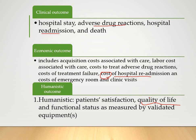Therefore, while treating patients, it is important to know the clinical outcome — for example, in epilepsy, how much the drug will manage the seizures — the economic outcome, how much cost is incurred, and what the clinical endpoints are. Simultaneously, the drug therapy should not adversely affect the quality of life of the patient. These three points are very important when we discuss cost.